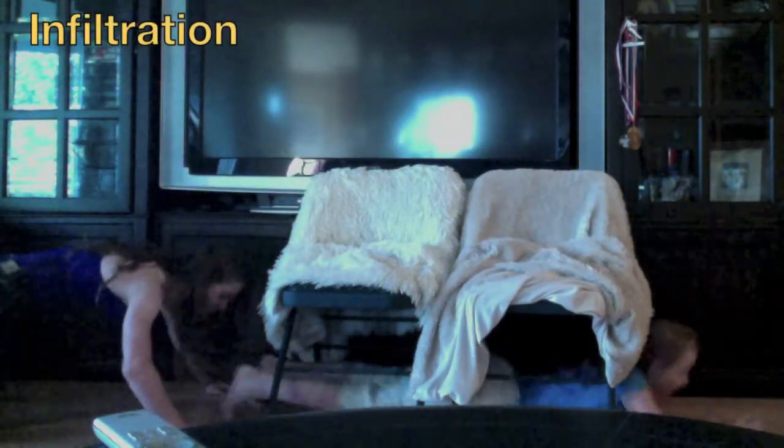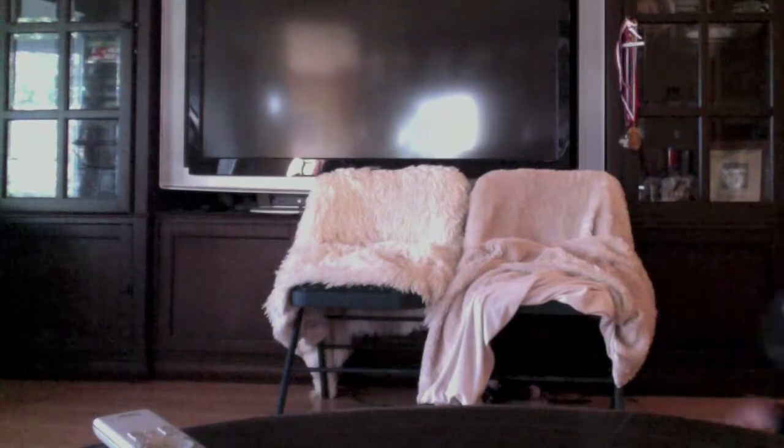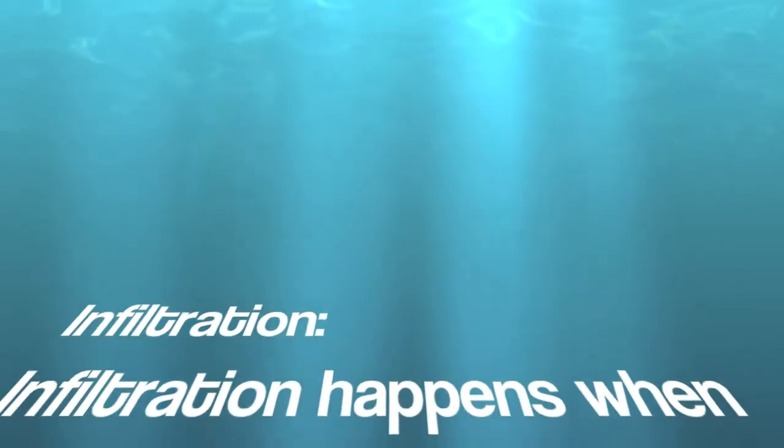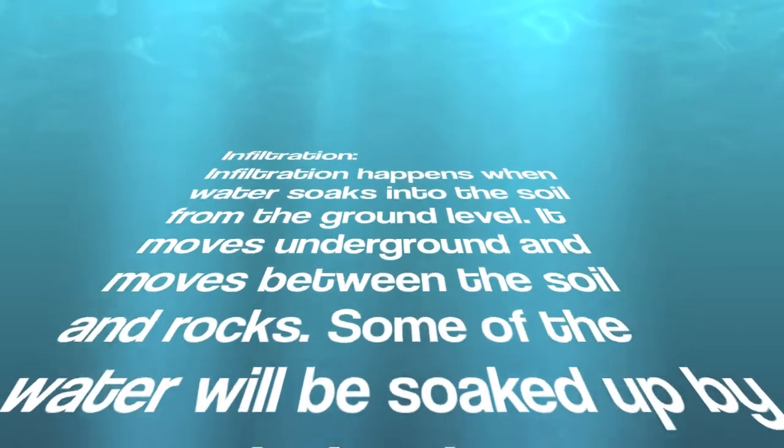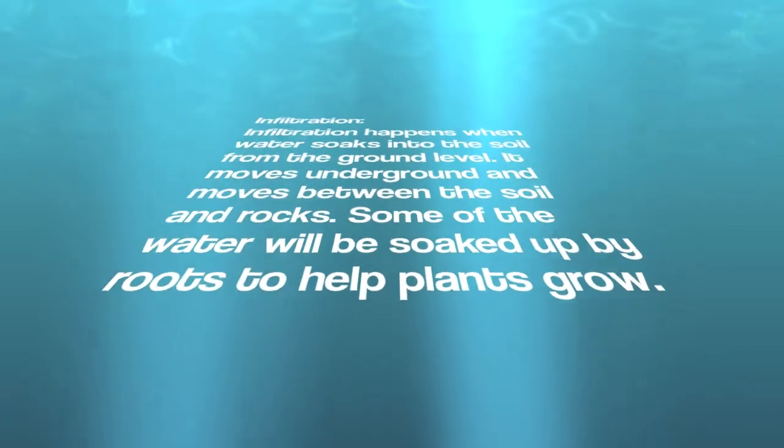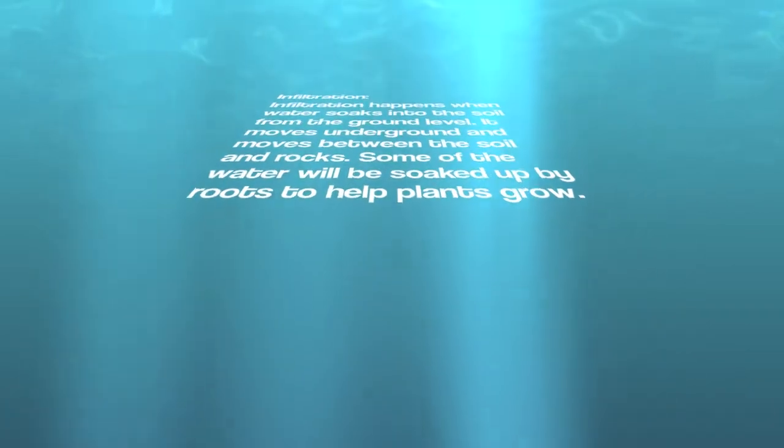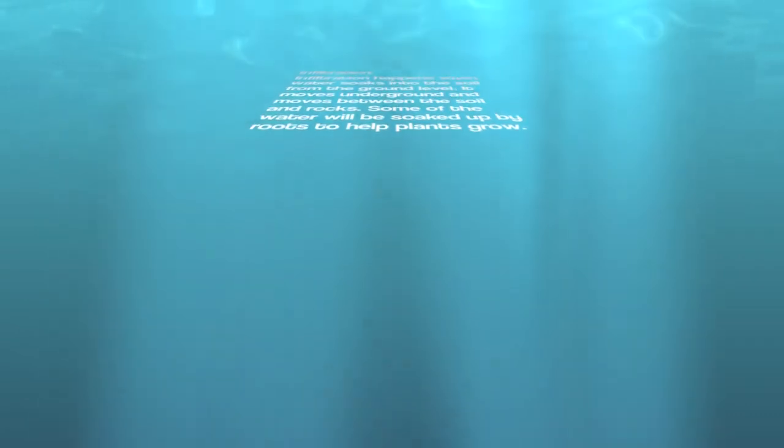Infiltration. Infiltration happens when water soaks into the soil from the ground level. It moves underground and moves between the soil and rocks. Some of the water will be soaked up by roots to help plants grow.